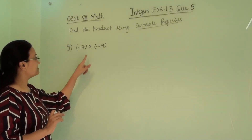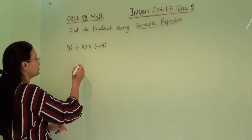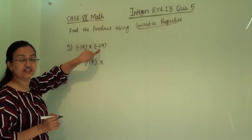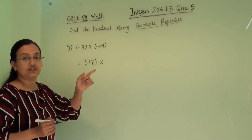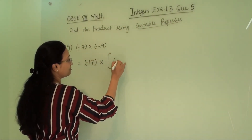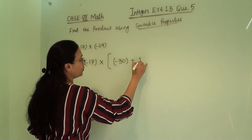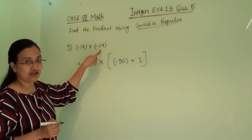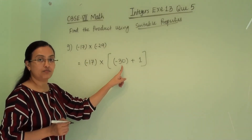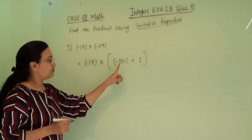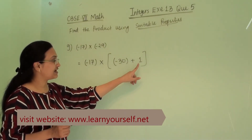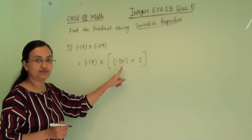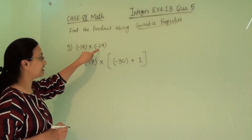Next numerical: (-17) × (-29). We keep -17 as is and modify 29 as 30 - 1, writing it as -30 + 1. We write -30 because we need a negative integer -29. If we wrote 30 + (-1) it would give +29, so the bigger number must carry the negative sign to get -29.